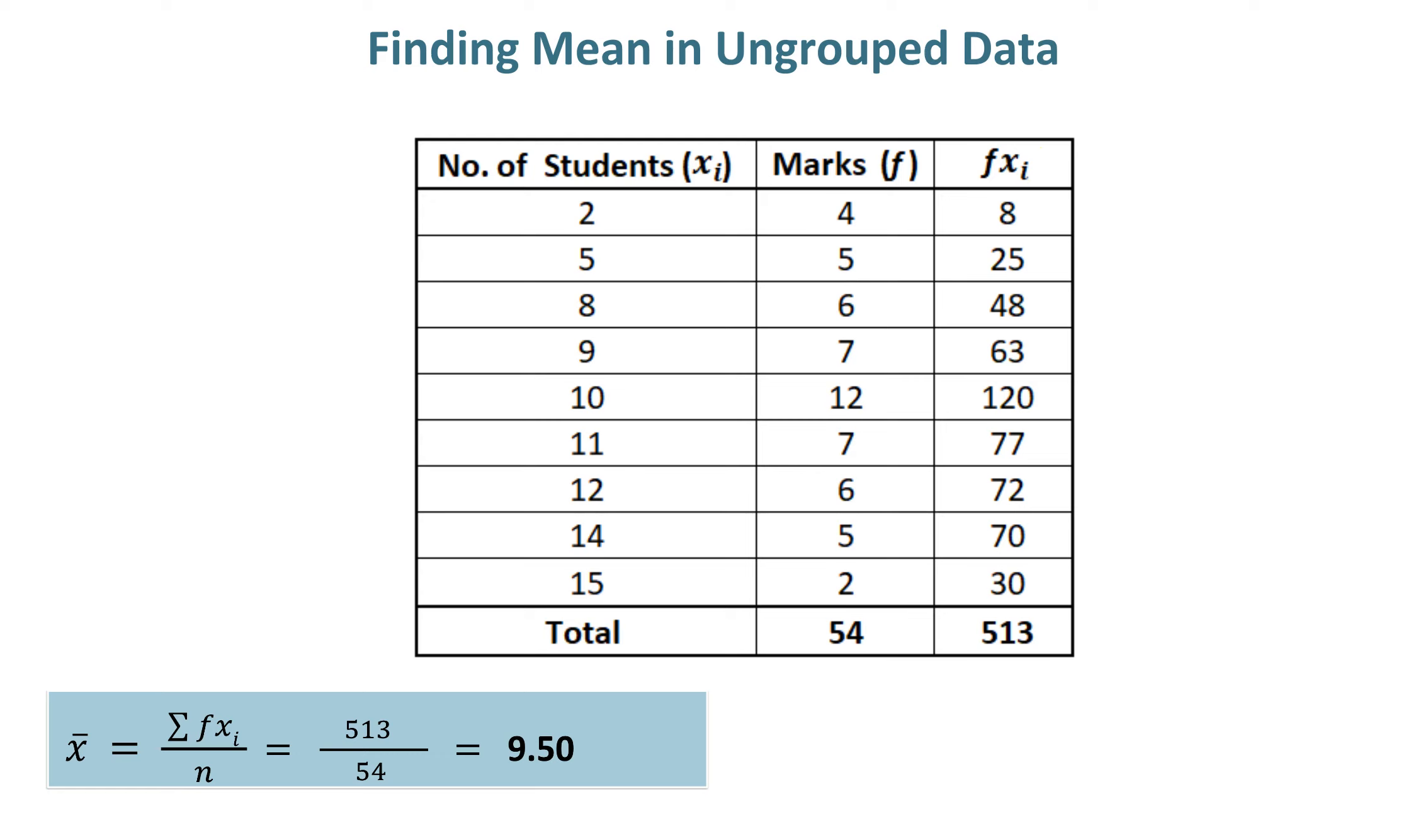Frequencies are also given in front of each class marks. By adding all frequencies, which are 54, after that we will multiply first and second column to get product of fxi.